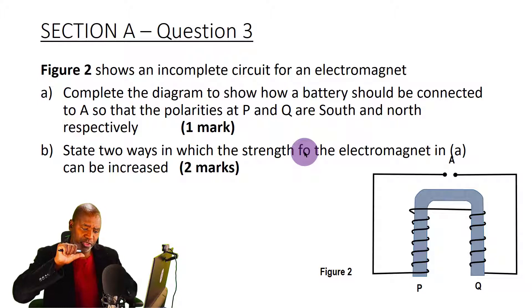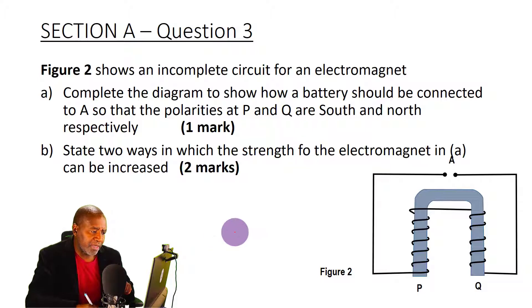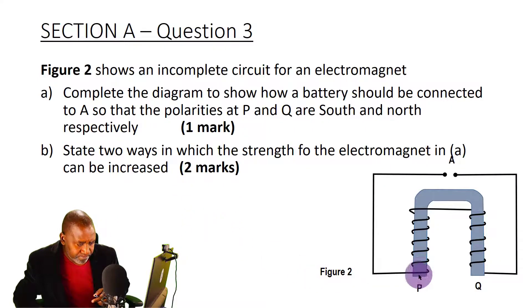So when you look at point Q, we have been told that at point P, at point P it's supposed to be a south pole. That means that this part here will be a north pole.